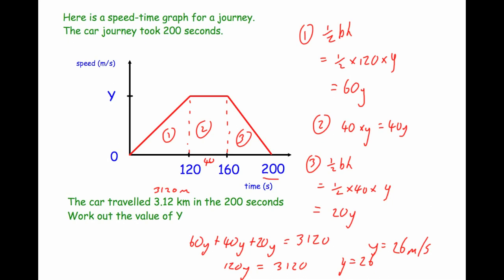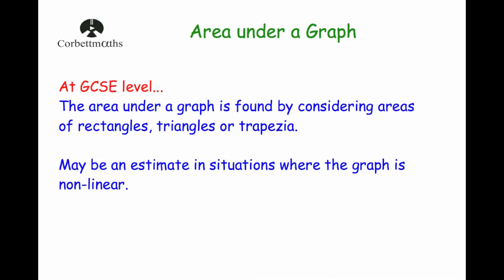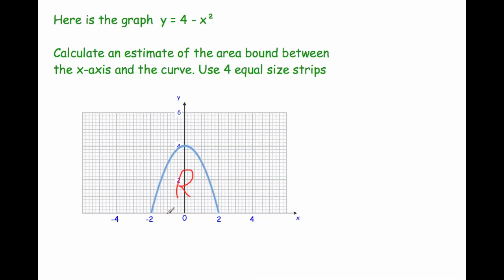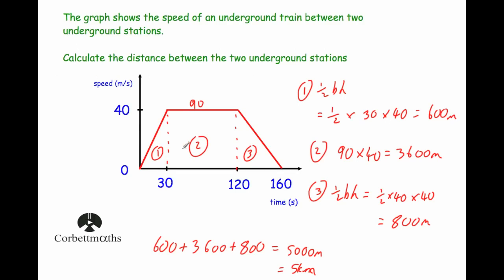To recap: to find the area under a curve we may need to estimate it by using strips, working out the areas of the individual shapes and adding them up. If the graph consists of straight lines, we split it exactly into rectangles, triangles, and trapezia and find those areas directly. Remember, the area under a speed-time graph gives the distance traveled.